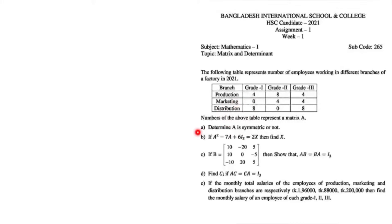The next solution determines A⁻¹ using the values calculated from the previous slide. There is a small information gap — I forgot to write I₃ in the expression, sorry for the mistake. The answer remains correct; no need to worry about the final result.